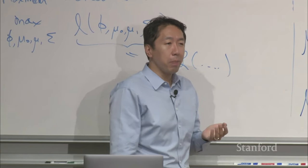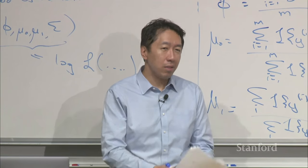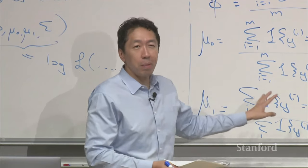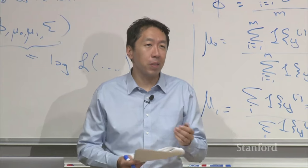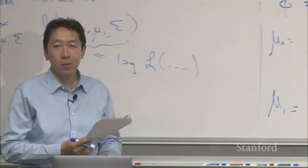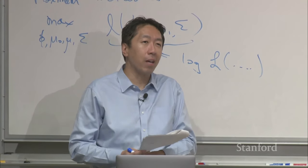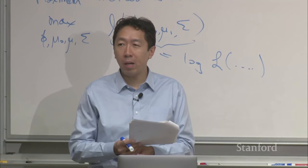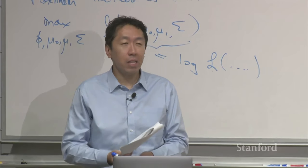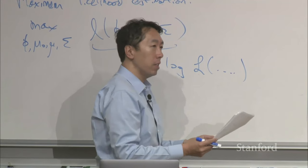A student asks: why do we use two separate means mu₀ and mu₁ but a single covariance matrix sigma? It turns out that if you build the model this way, the decision boundary ends up being linear. You could choose to use two separate covariance matrices sigma₀ and sigma₁, which is also reasonable — but you'd roughly double the number of parameters, and you'd end up with a non-linear decision boundary.